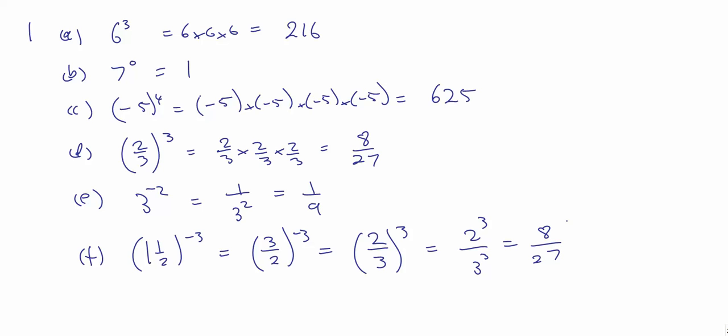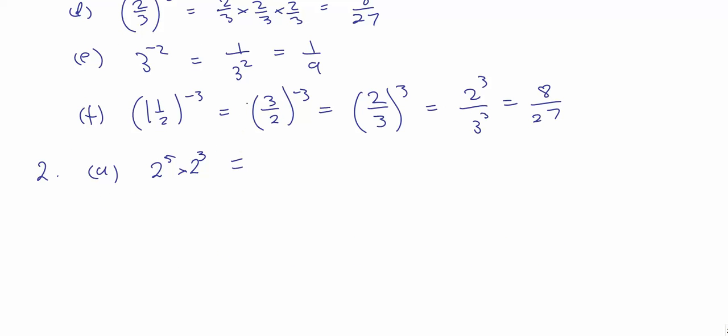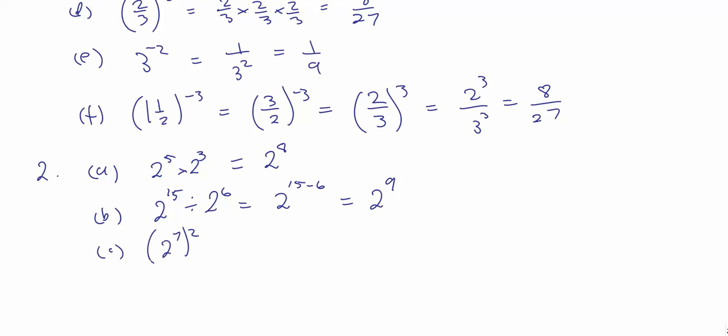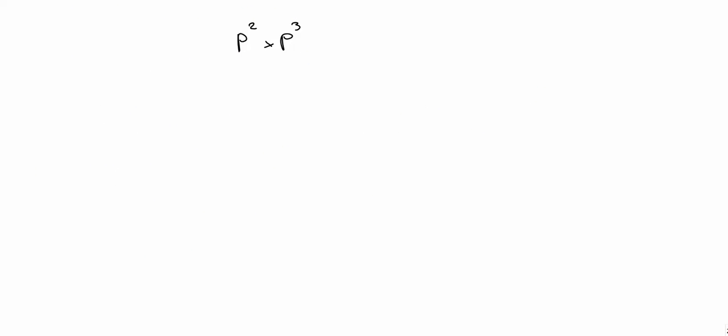Part 2A: 2 to the power of 5 times 2 cubed — you add the indices — 2 to the power of 8. Part B: 2 to the power of 15 divided by 2 to the power of 6 — it's division so we subtract the indices — 15 take 6 is 9. Part C: 2 to the power of 7 squared — we multiply the indices — giving 2 to the power of 14. The rules also apply to algebraic expressions: P squared times P cubed is P to the 2 plus 3, or P to the power of 5. T to the power of 5 divided by T cubed is T to the 5 minus 3, or T squared.